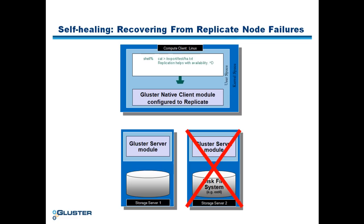The Gluster client receives the file write operation and executes it using a two-phase commit process. First, it obtains a lock on the file. The lock is obtained on the first storage server in the replicate set that is up and running.